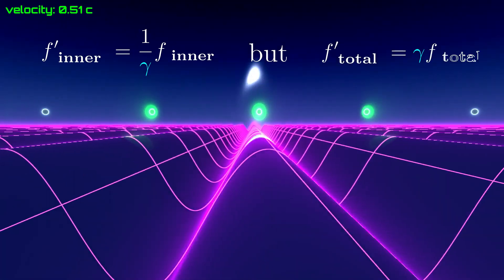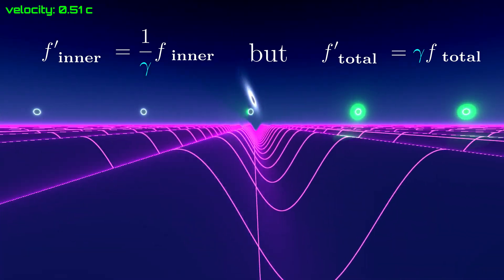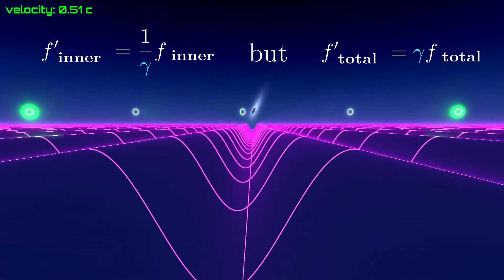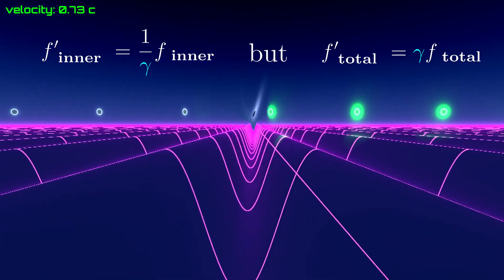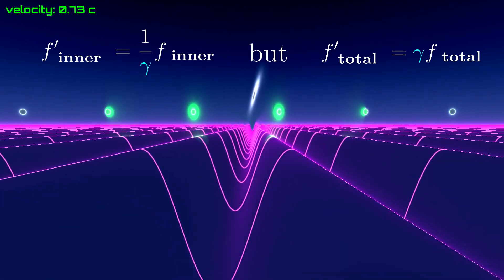In fact, the ripples more than compensate for the time dilation. And the end result is that we measure more ups and downs during a time interval.